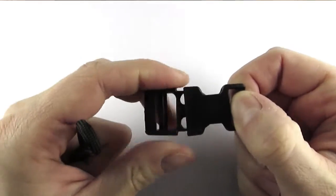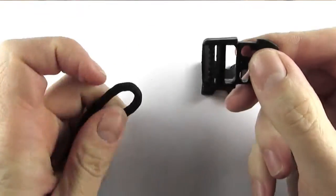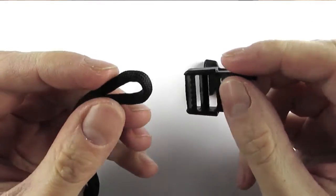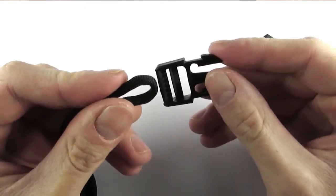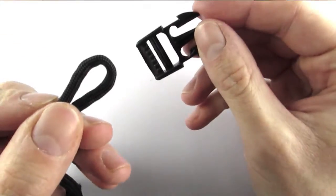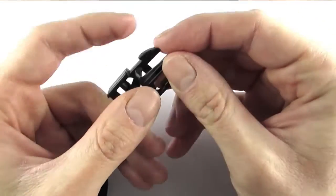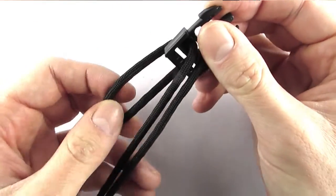First thing you're going to do is open your buckle, fold your paracord in half, and at the middle point insert this piece of paracord through the top of your buckle.